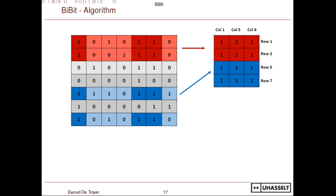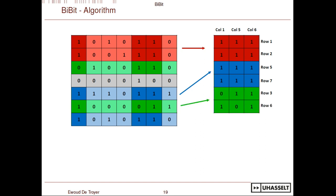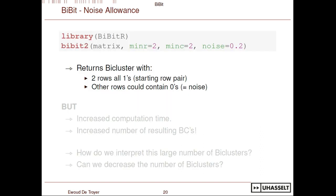The way we do that with the BBit algorithm is we continue beyond perfect-fit rows. We also add rows which do not fit perfectly. In this case, we add rows three and six where one zero is allowed, and that would be our final bi-cluster. This adaptation is included in the bbitr package. You give the minimum number of rows, minimum number of columns, and the noise — either an integer amount of zeros, or a percentage, such that if you have a bi-cluster of ten columns and allow 20%, two zeros are allowed.